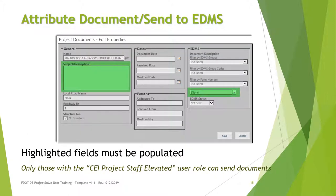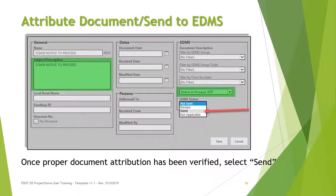When you click the edit button, the EDMS box will appear. Please note that the subject description box and the document description box, both highlighted here, must be completed prior to sending to EDMS. The document will not be accepted into EDMS if the information is missing. When choosing the document description, you can filter the choices that will appear using the first three boxes in the EDMS section. Only users with a designated role of CEI project staff elevated can send documents to EDMS. Once all of the boxes have been properly completed, you are ready to send the document to EDMS. If you do not want to send the document, you can select Not Applicable.